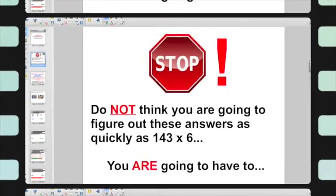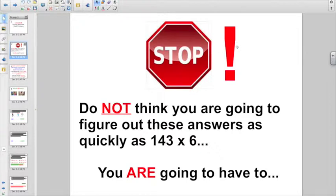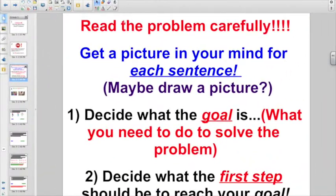Are we ready? So the first thing whenever we get to this lesson, I just want everybody to stop, take a deep breath, and please do not think you are going to figure out these problems as quickly as 143 times 6. This is an algorithm problem. These are serious thinking word problems. You are going to have to read the problem carefully. You're going to have to get a picture in your mind for each sentence. Maybe you're going to want to draw a picture here and there. You're going to have to do two things to be successful with these. Decide what the goal is, meaning what do you need to do to solve the problem. Decide what the first step should be to reach your goal.